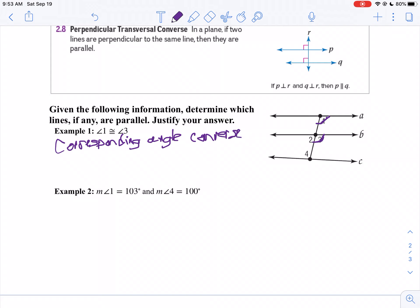Since angle 1 and angle 3 are corresponding, what lines do they touch? They make line A parallel to line B.